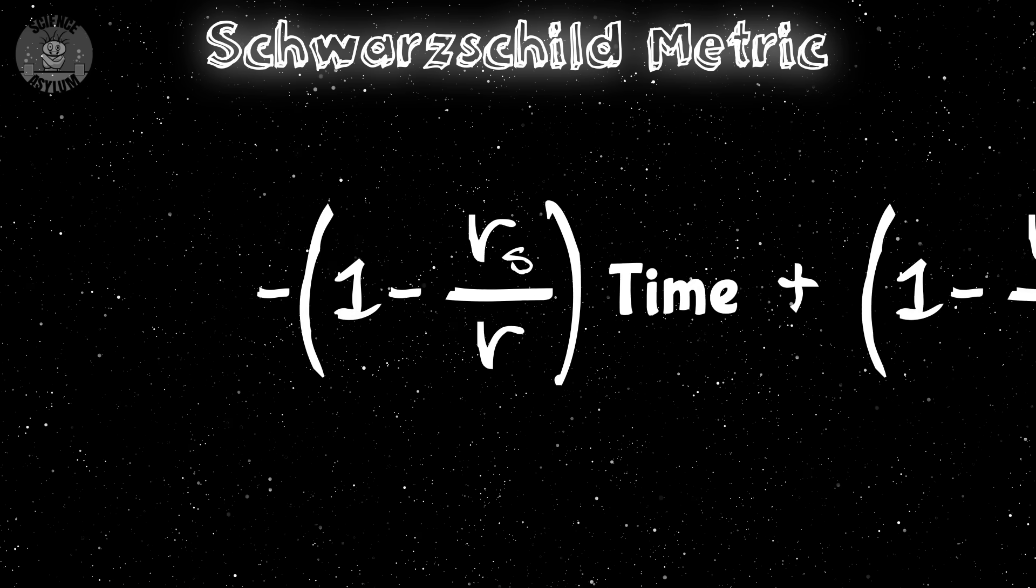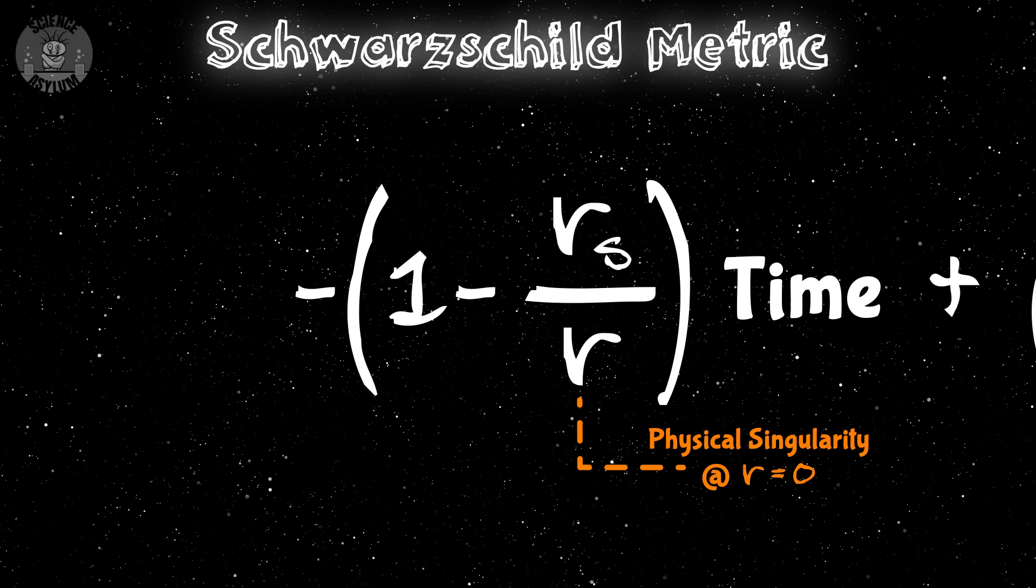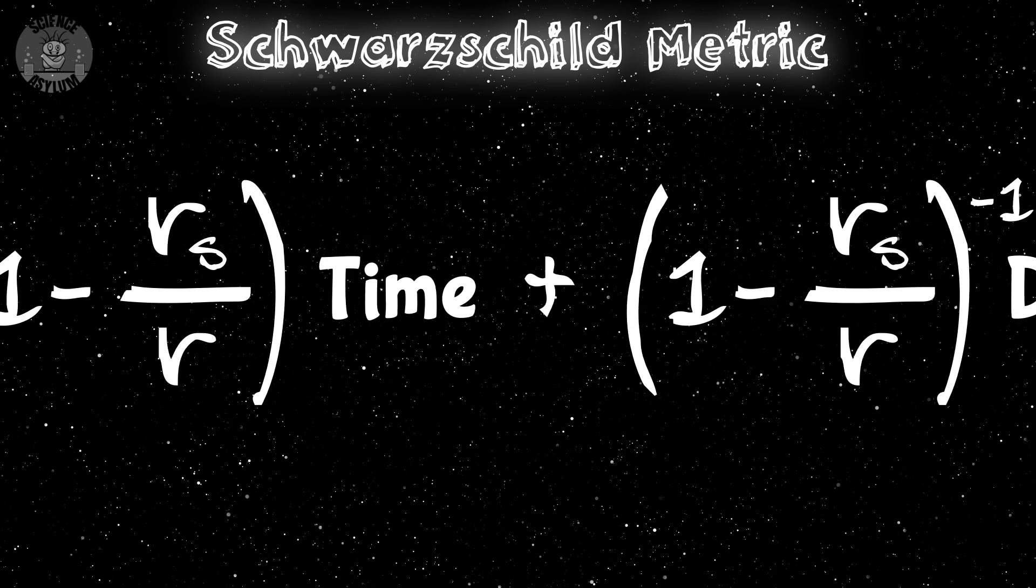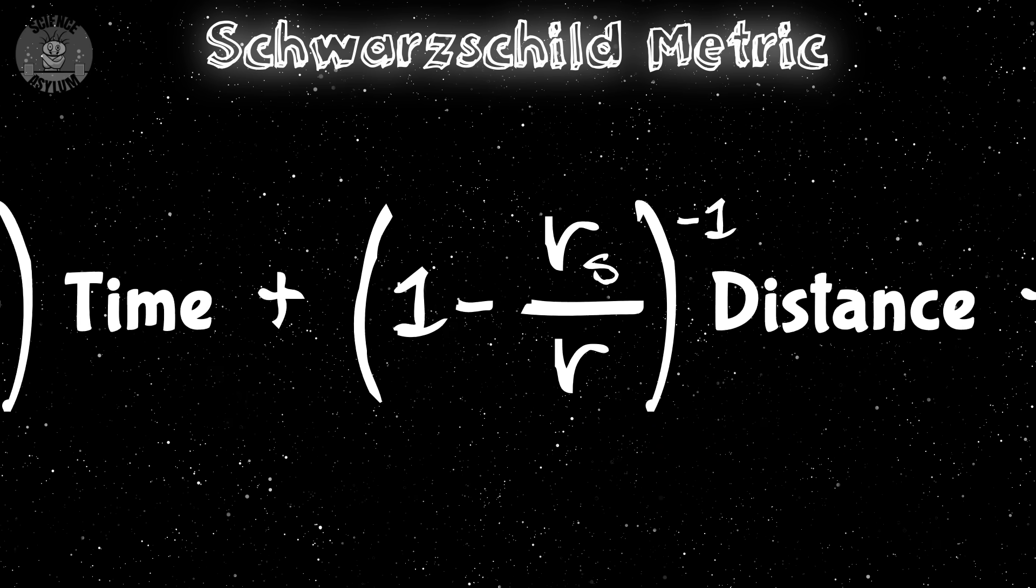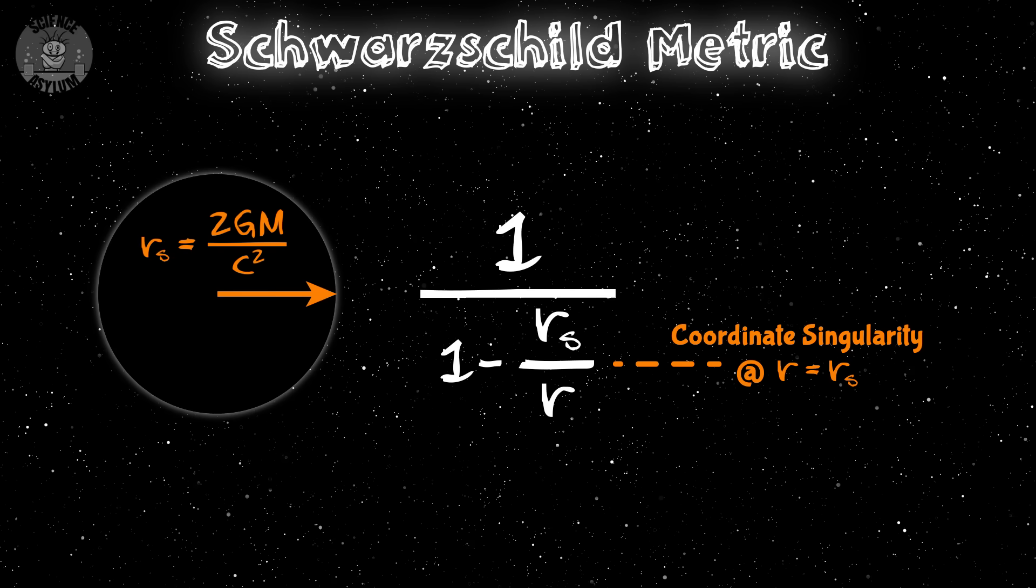If all the mass is compressed into a single point, we get what's called a physical singularity at R equals zero. But there's also this negative exponent, which means this term flips over and we run into another problem at the Schwarzschild radius, otherwise known as the radius of the event horizon.